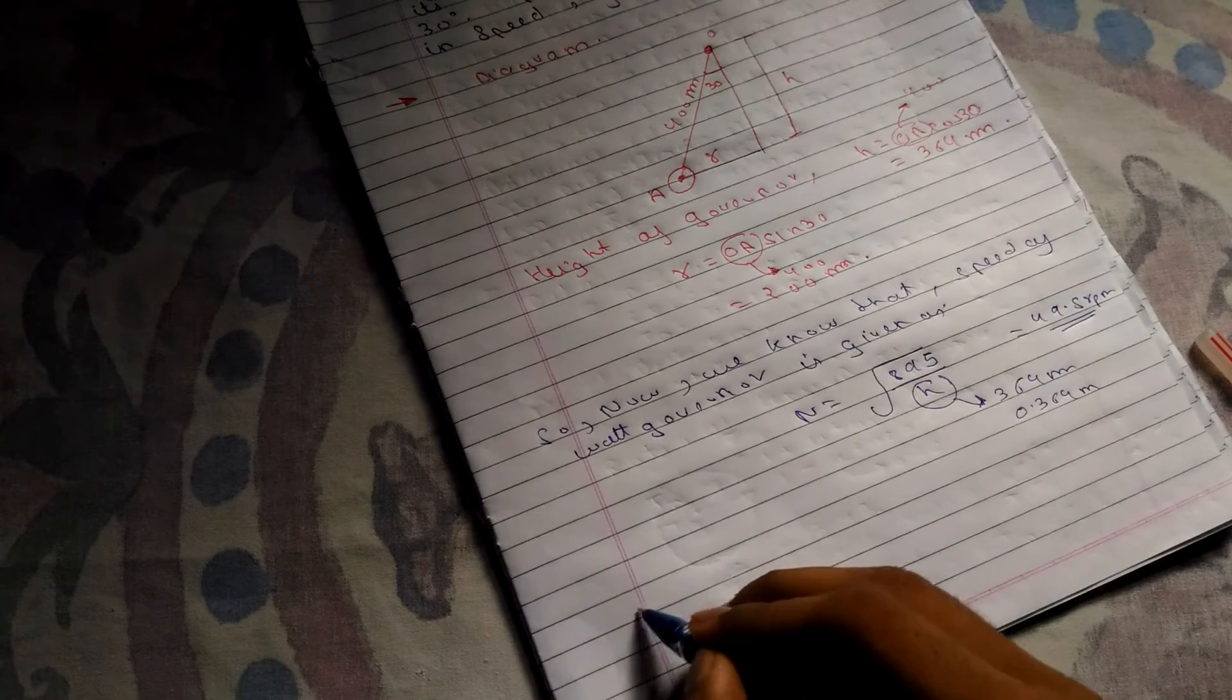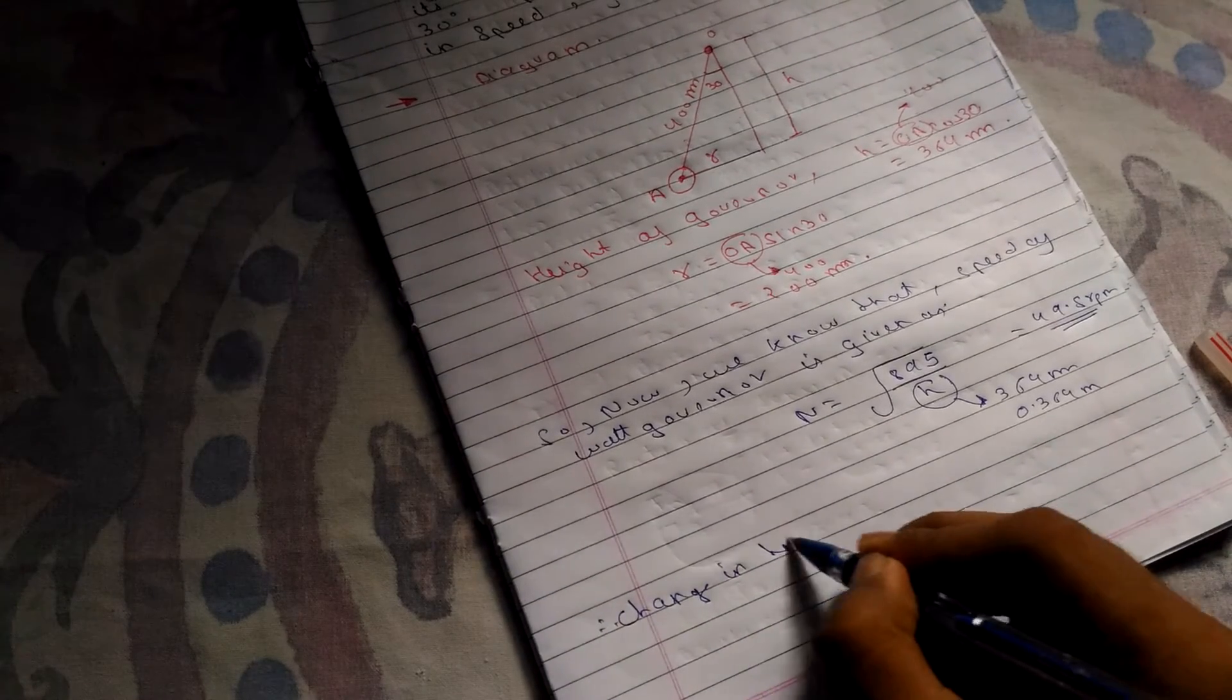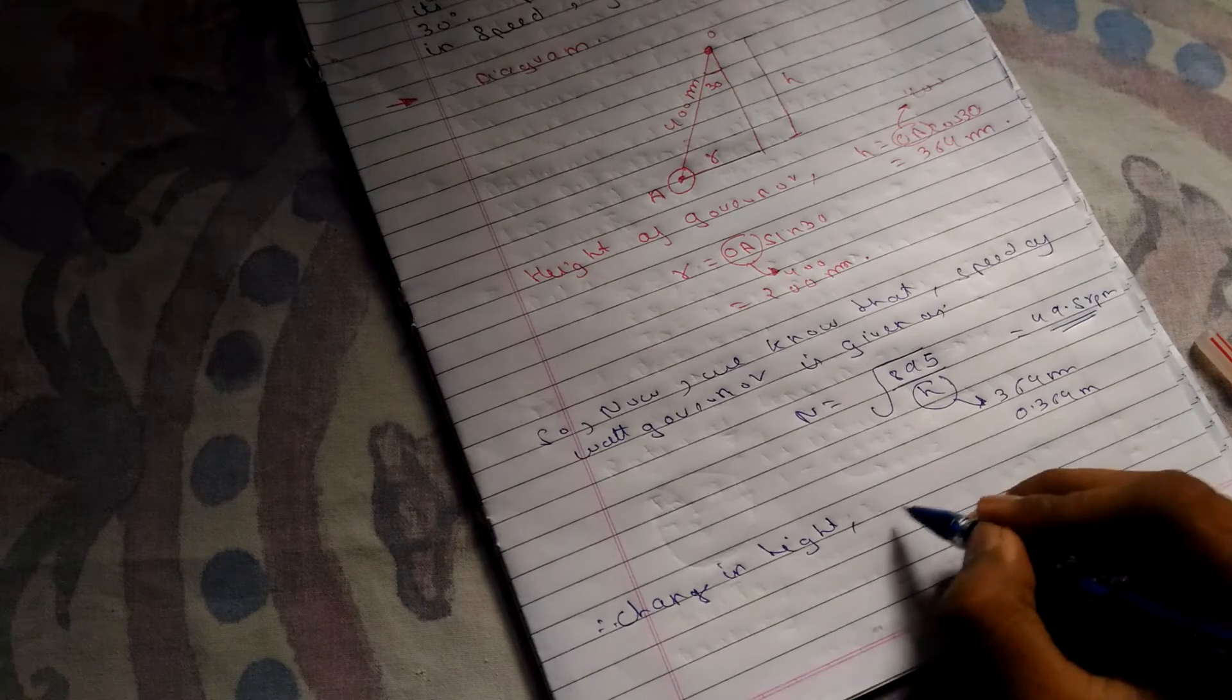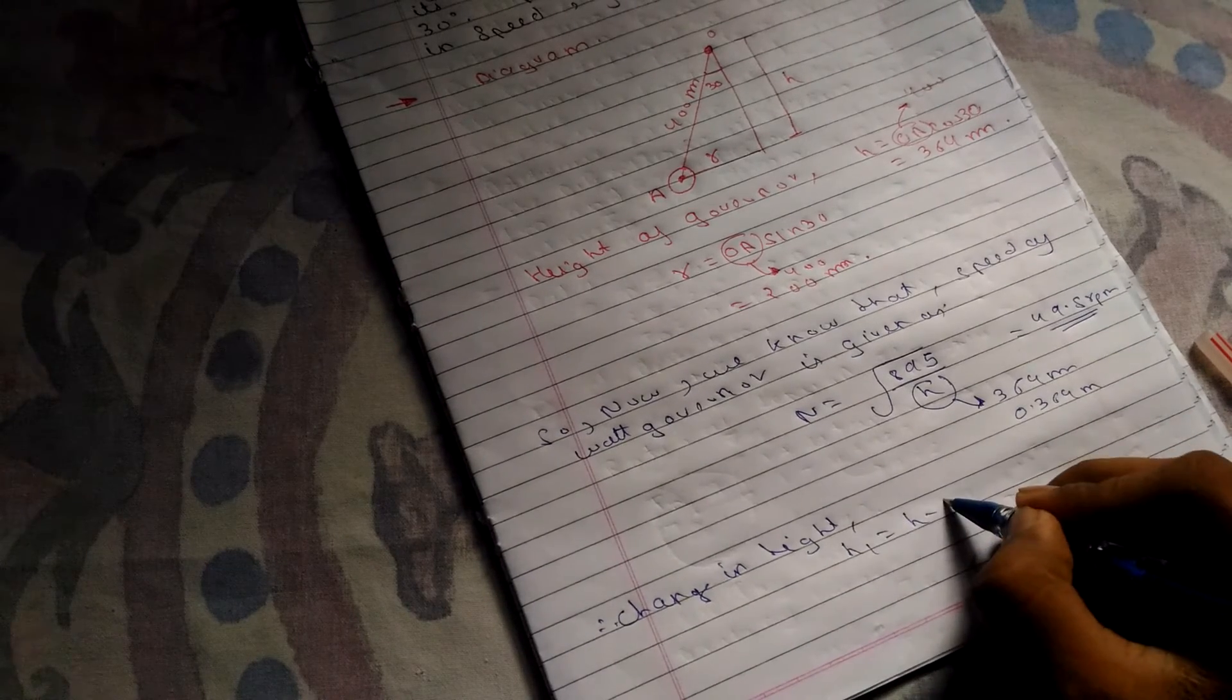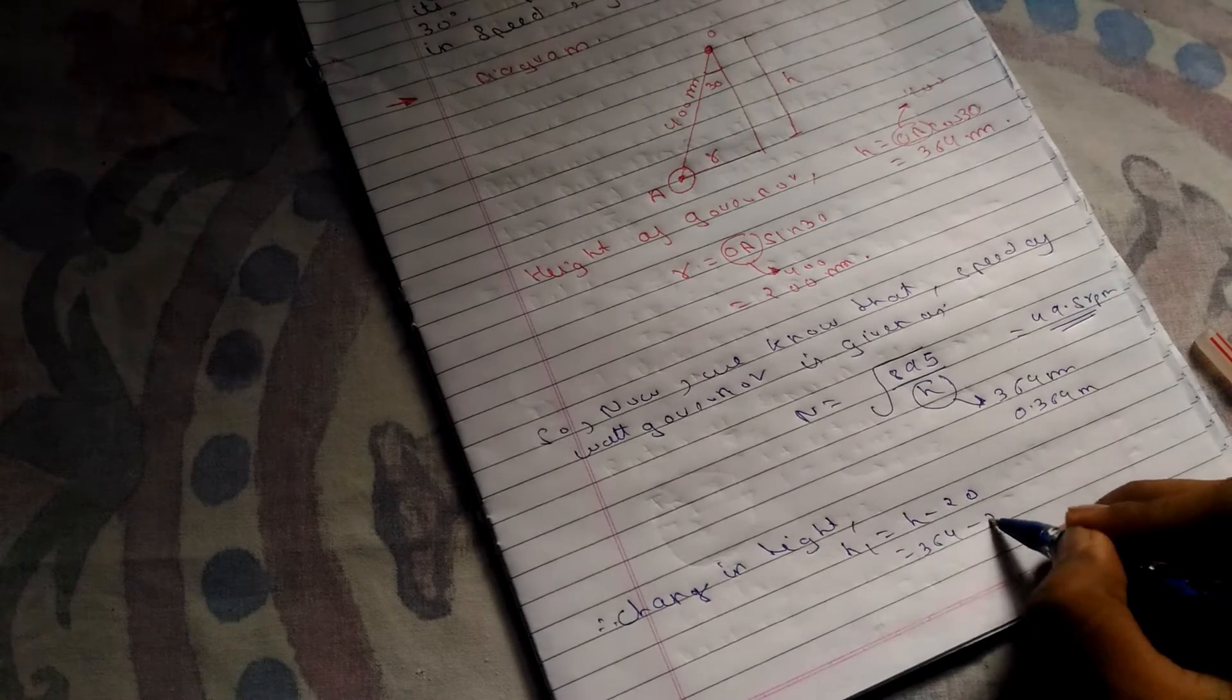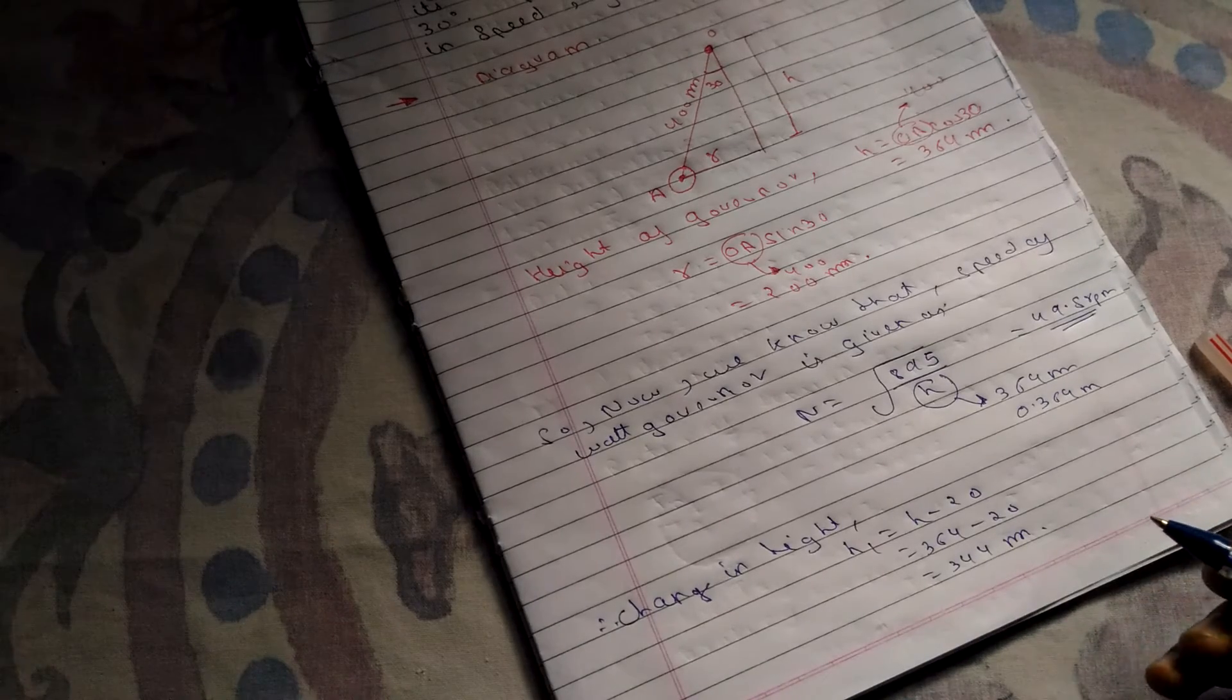Now for the change in height: initially the height was 364 mm. So H1 equals H minus 20. The change in height is 20 mm. We have H1 equals 364 mm minus 20 mm, which equals 344 mm.